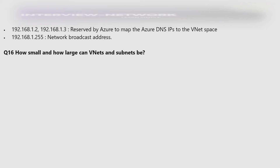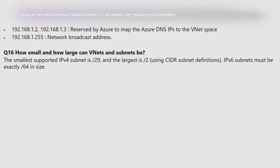How small and how large can VNets and subnets be? The smallest supported IPv4 subnet is /29 and the largest is /2 using CIDR subnet definitions. An IPv6 subnet must be exactly /64 in size.